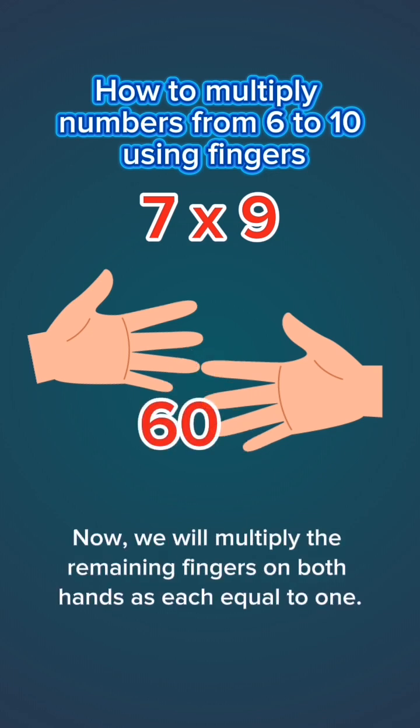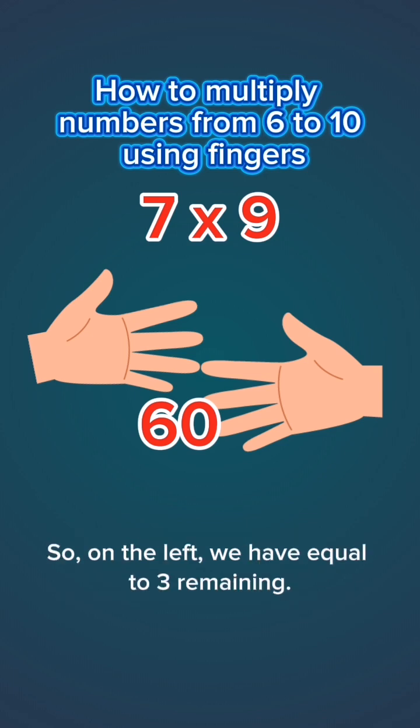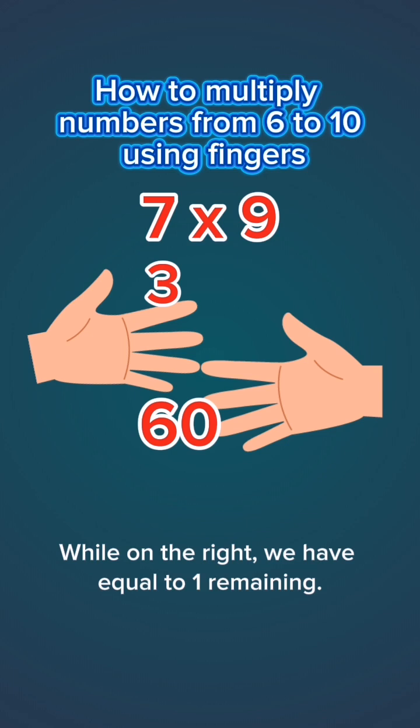Now we will multiply the remaining fingers on both hands as each equal to 1. So on the left we have 3 remaining, while on the right we have 1 remaining.